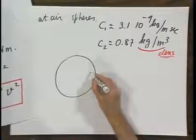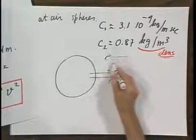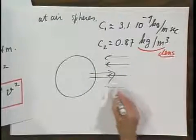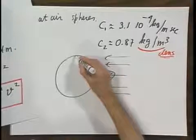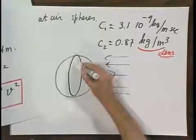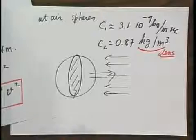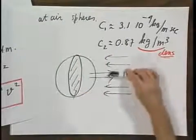And we move the sphere in this direction, then it experiences a wind. Well, the cross-section of this sphere is obviously proportional to the resistive force.